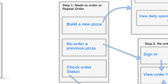Here's step one. This is the screen that a user sees when they first enter the application, and there are only one of three things they can do: they can build a brand new pizza if they've never used the application before, they can reorder a previous pizza if they've used this app before, or if they have a pizza that's already been ordered, they can check its order status. To begin, we will pick the first option, which is to build a new pizza.